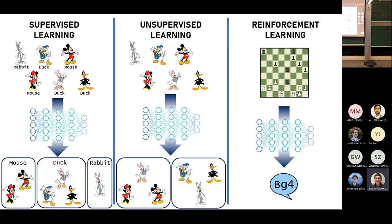In reinforcement learning, you don't really have data in the same way — you generate your data on the fly. You go through tasks where at each point you want to make a decision about what action to take. For example, given the current state of a chess board, we might ask our reinforcement learning algorithm what move to take next.